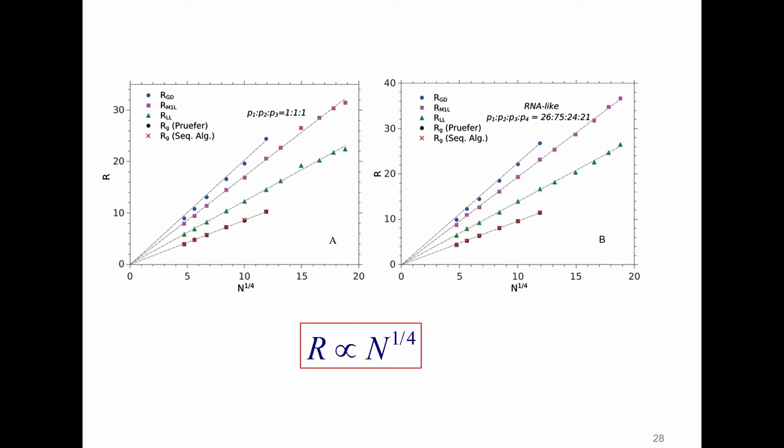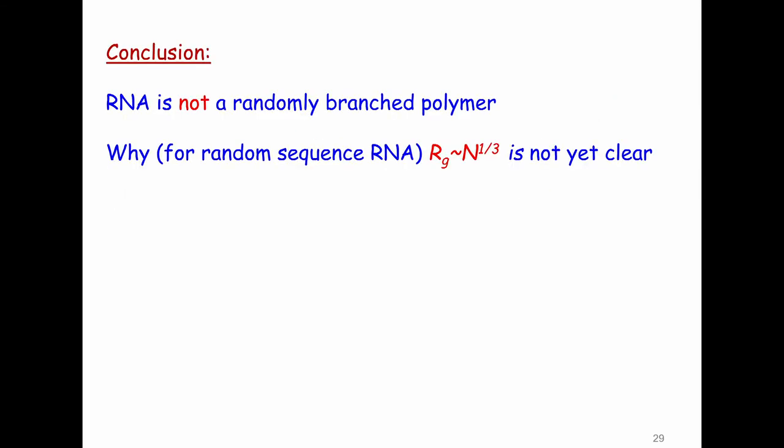Let me summarize. So what I showed you, we took viral RNAs, they were compact. We randomized the sequence, they became bigger. They became bigger and they scaled like n to the 1/3. We want to understand why it is n to the 1/3. Maybe it's not relevant for viruses, but it's a puzzle we want to understand. And so far we don't. Maybe my mathematician friend, maybe smarter people can understand it. But it has to do with the folding of the RNA. It's not a simple randomly branched polymer. There is something in the sequence.